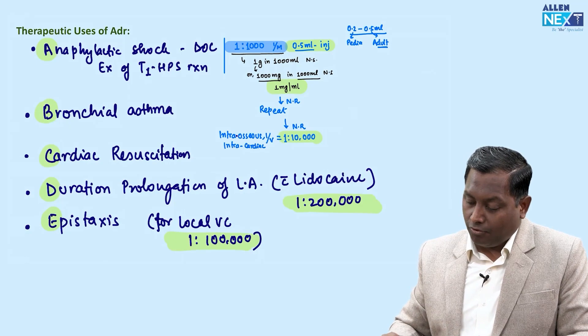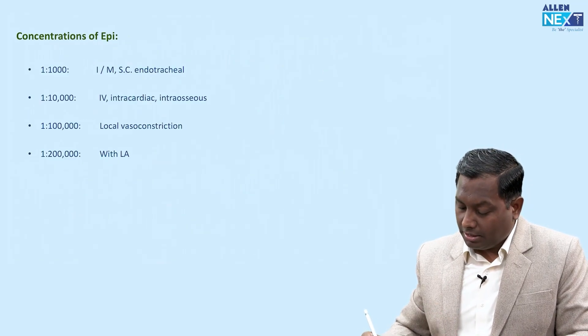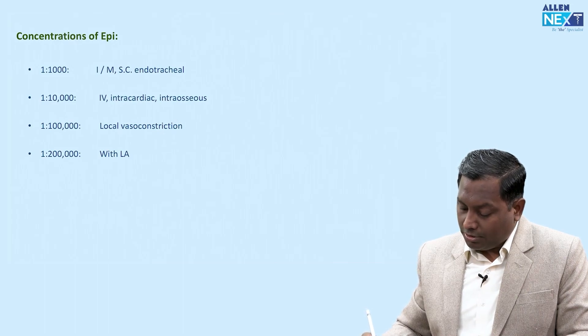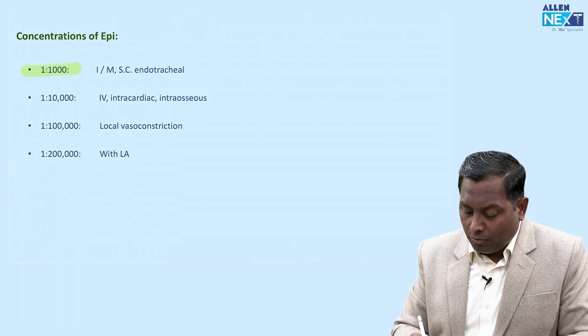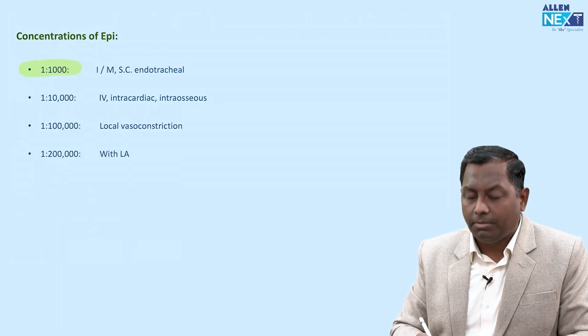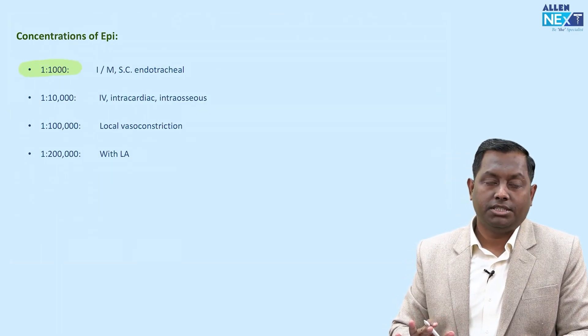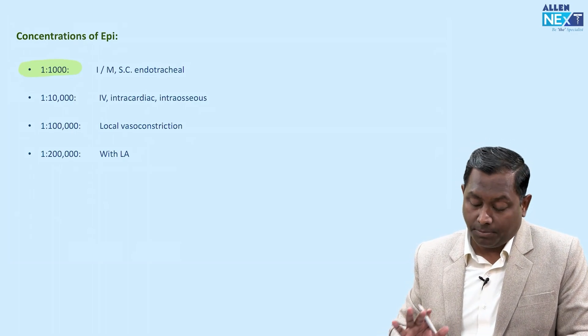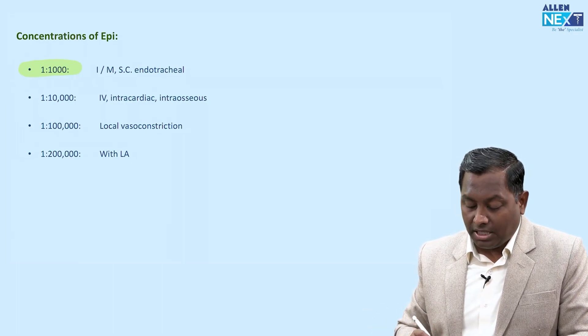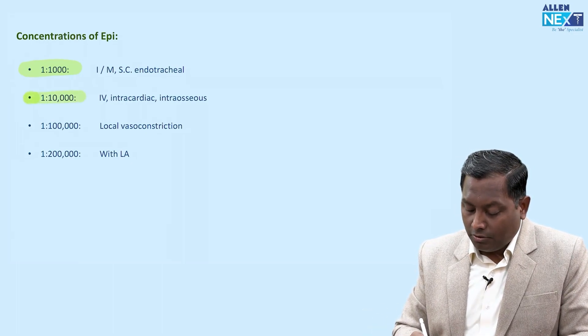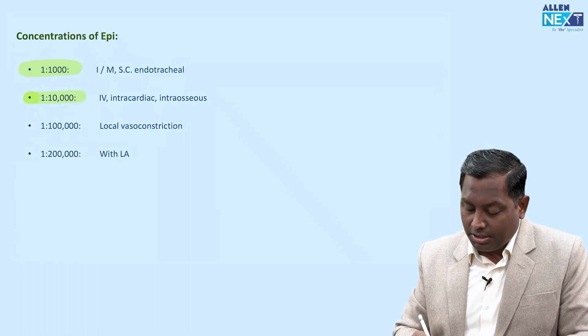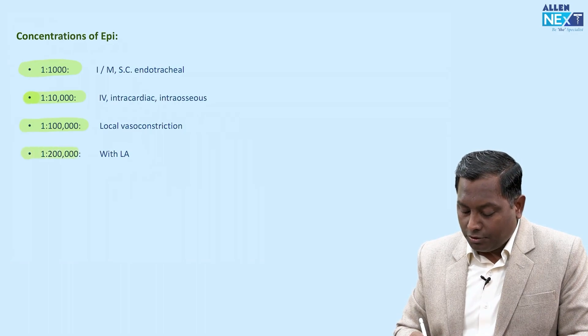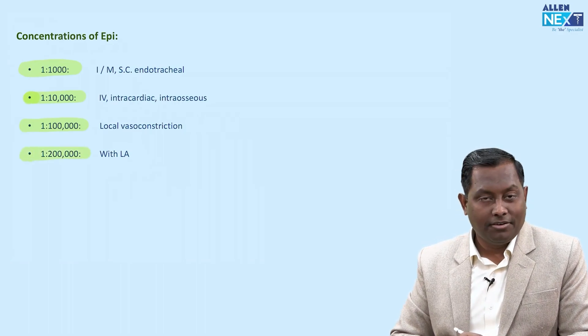This is a quick summary of different concentrations: 1:1000 IM, or if you want subcutaneous you can use it but that's slow absorption so we won't prefer it. 1:10,000 will be IV, intracardiac, or intraosseous. 1:100,000 for epistaxis, and 1:200,000 with local anesthetic like lidocaine.